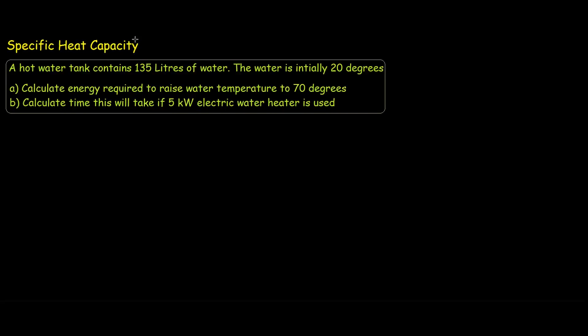So we have this specific heat capacity problem where a hot water tank contains 135 litres of water and the water is initially at 20 degrees. The first part of our question asks us to calculate the energy required to raise the water temperature to 70 degrees.